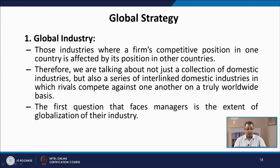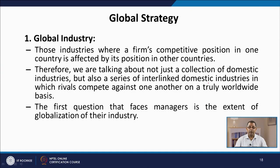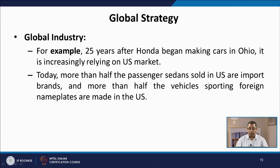A global industry is one where a firm's competitive position in one country is affected by its position in other countries. We are talking not just about a collection of domestic industries, but a series of interlinked domestic industries in which rivals compete against one another on a truly worldwide basis. For example, 25 years after Honda began making cars in Ohio, US, it is increasingly relying on the US market — today more than half the passenger sedans sold in the US are import brands, and more than half the vehicles bearing foreign nameplates are made in the US.